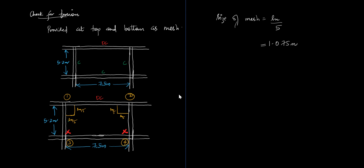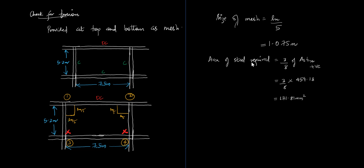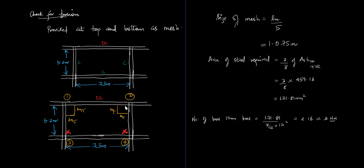The size of the torsion mesh is LX/5 and the area of steel required is 3/8 of AST X positive = 171.81 mm². Providing 10 mm bars: 171.81 divided by (π/4 × 10²) gives 3 bars — so place 3 bars in each direction at top and bottom of the slab at those corners to resist torsion. The slab is also divided into edge strip and middle strip; minimum reinforcement is provided in edge strips and maximum design reinforcement in the middle strip.